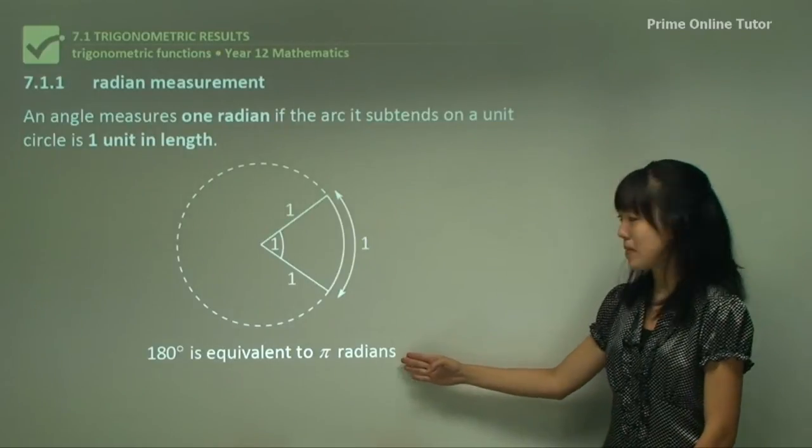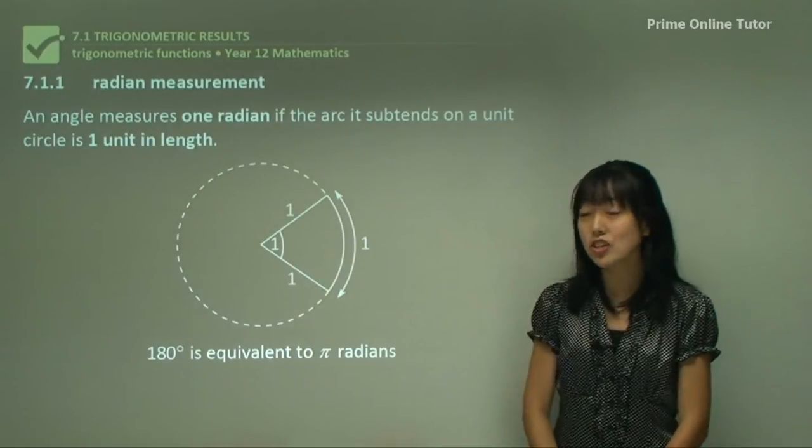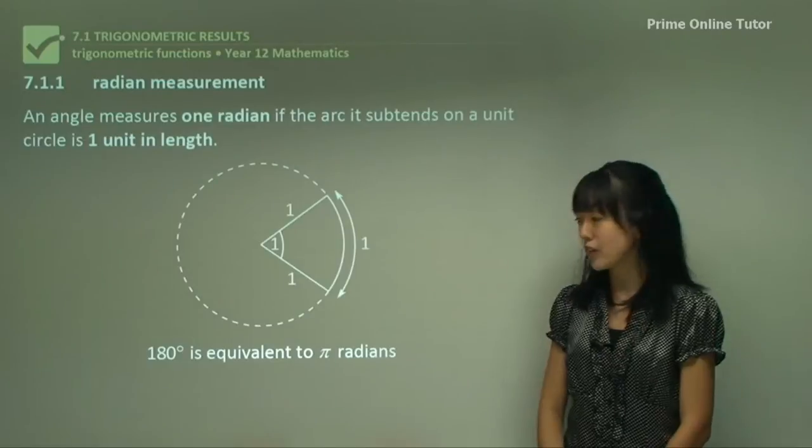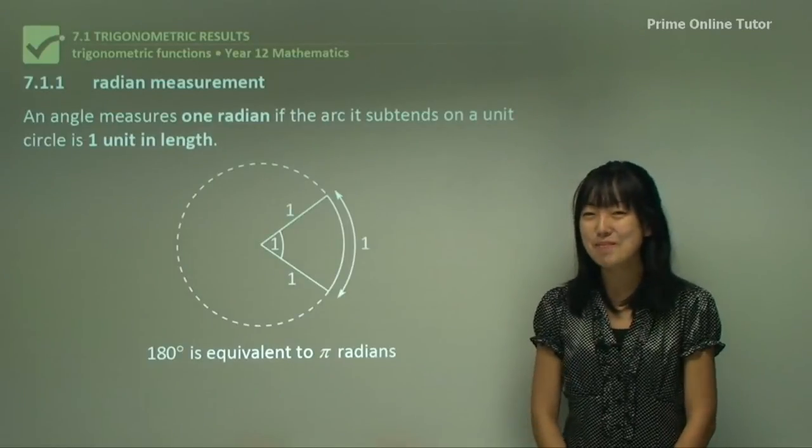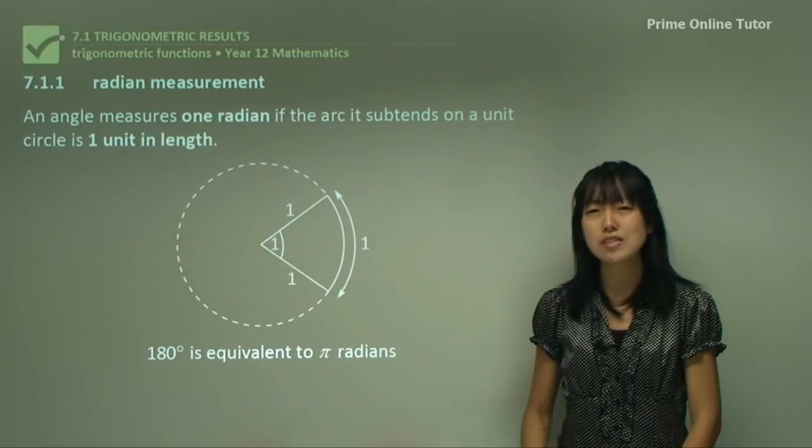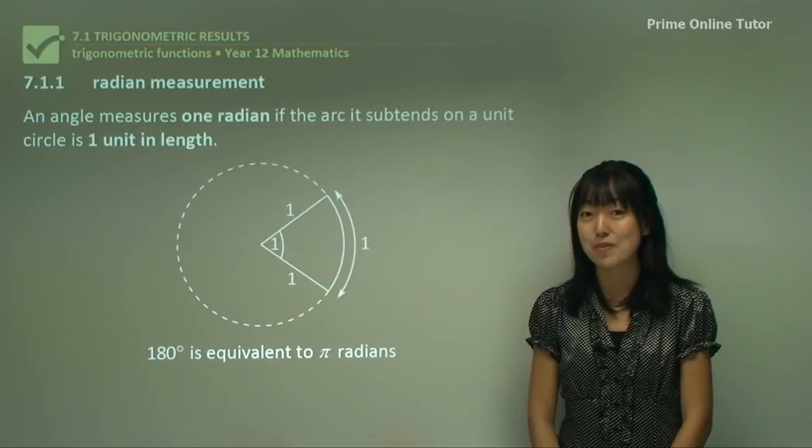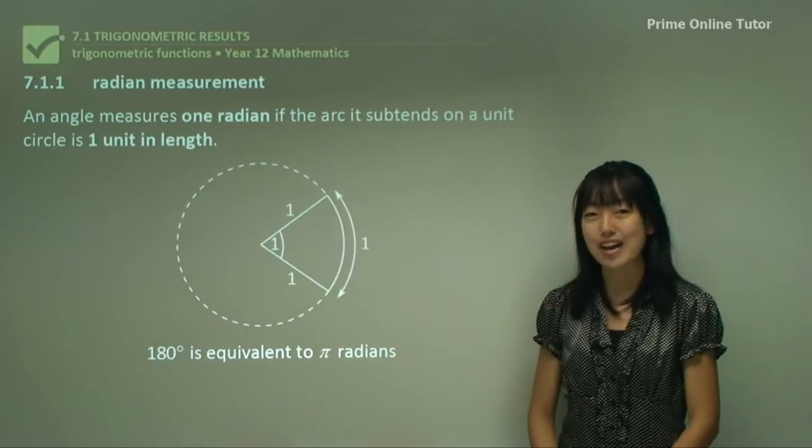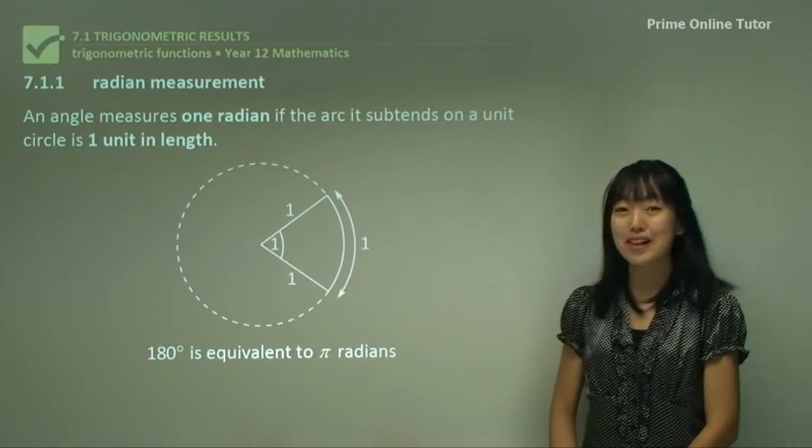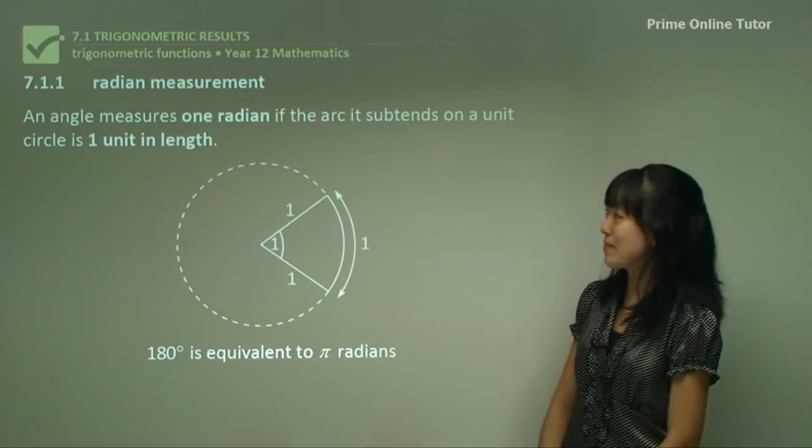More importantly would be this statement here. 180 degrees is equivalent to π radians. Make sure you understand that because you use that throughout trigonometry in year 12 mathematics. 180 degrees equals π radians. Let's see if we can apply this to some questions that's coming up.